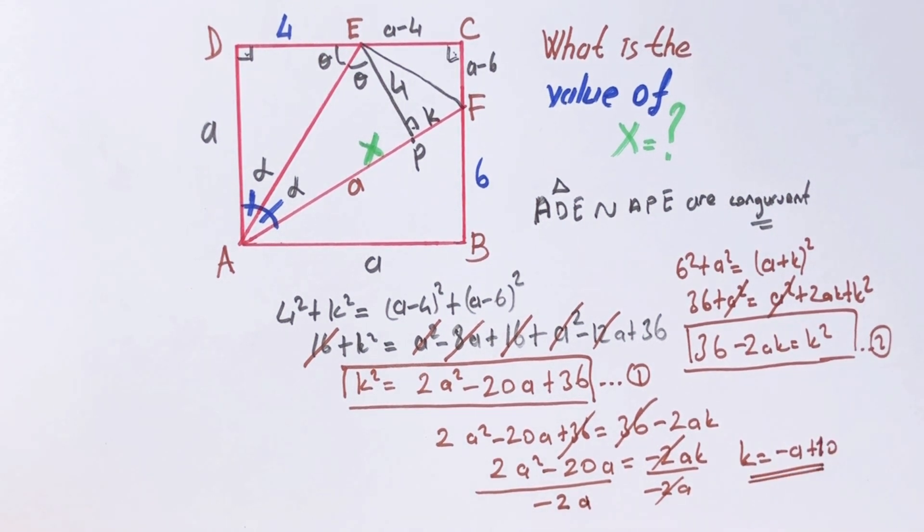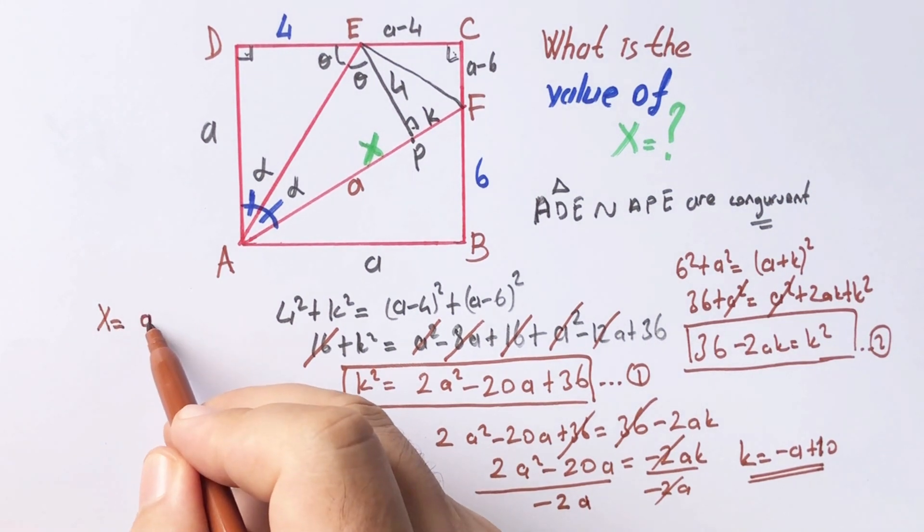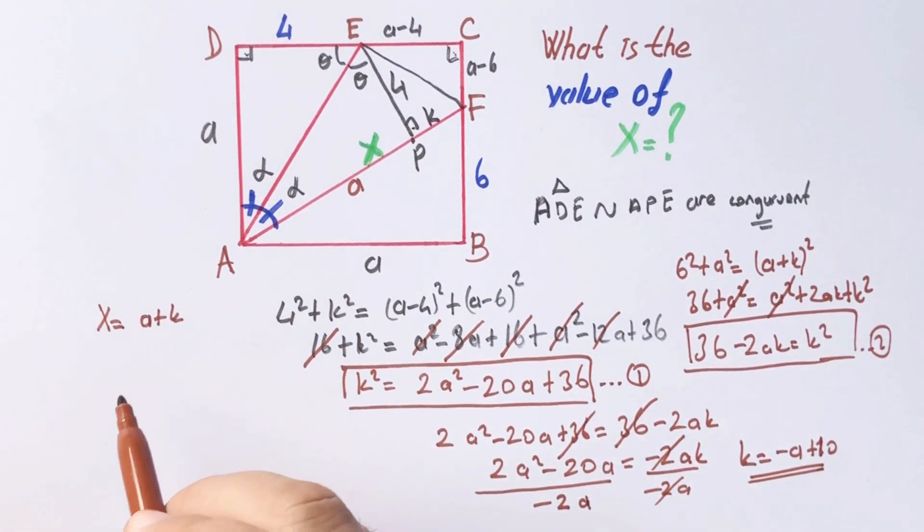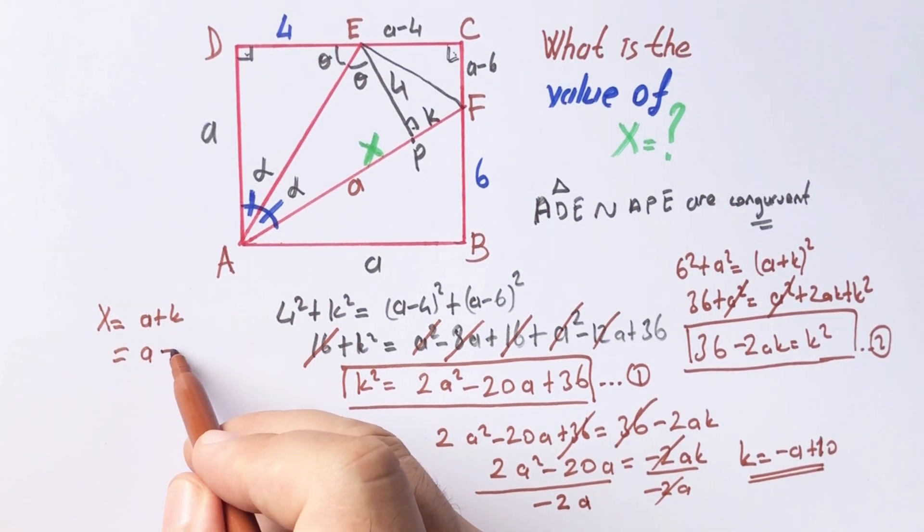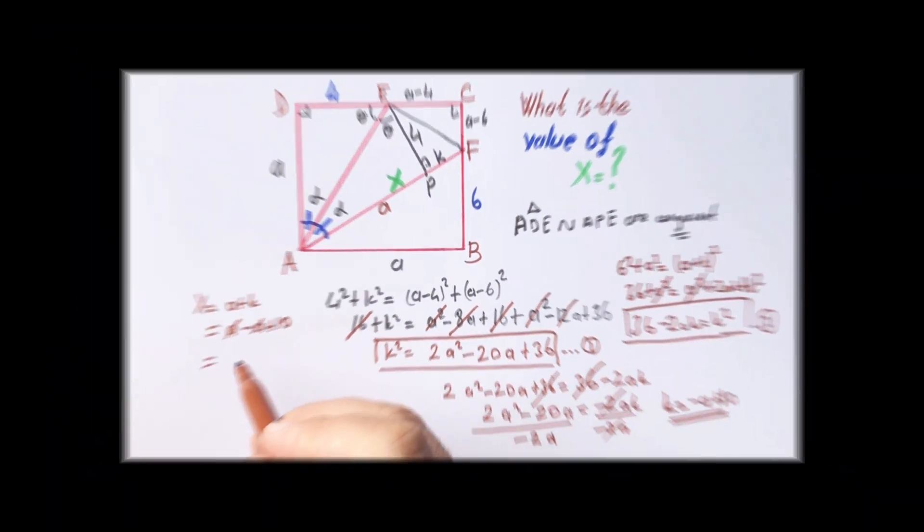X, you know that x is equal to a plus k. So a minus a plus 10, x is going to be 10 units.